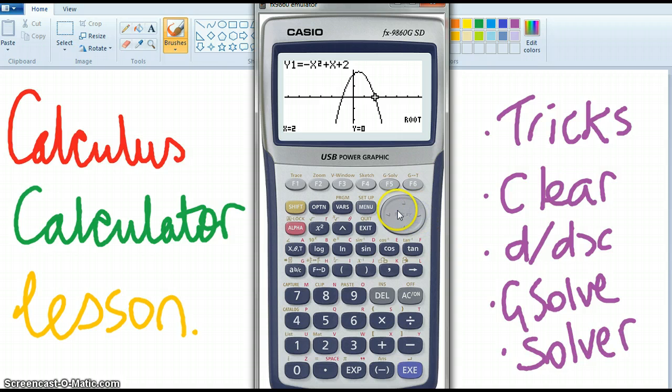So I've got the two places that, so this button here goes left and right. Shift G solve, y-intercept. Okay.